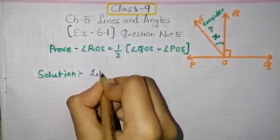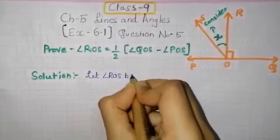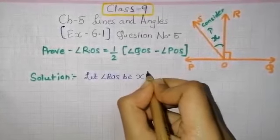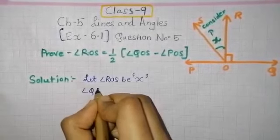Hello guys, I hope you all are doing well. This is Class 9, Chapter 5 Lines and Angles, Exercise 6.1, Question Number 5. In this question, you have to prove that ∠ROS is equal to 1/2[∠QOS - ∠POS].